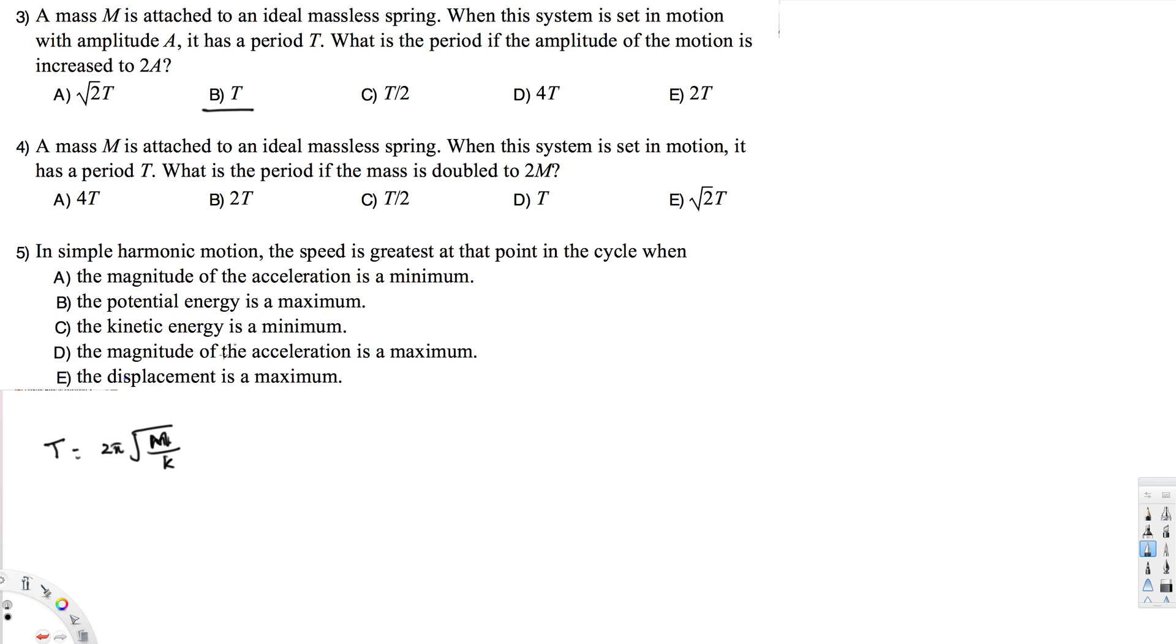This value becomes 2M, right? So the new period is 2π√(2m/k), which equals √2 times the original period. If you multiply by √2, you get √2 T. The answer is E.